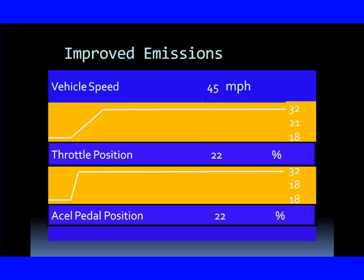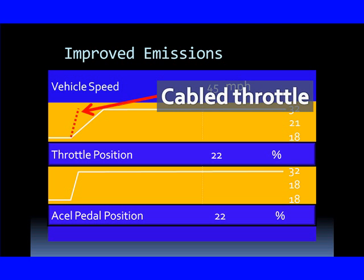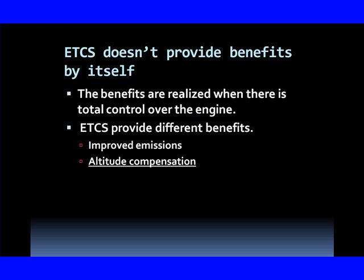So here we are with our pedal going up quickly — we saw this in scan data. We graphed it on a graphing multimeter and measured the milliseconds. On a cable throttle, we would have gone straight up, but with electronic throttle control, we don't.